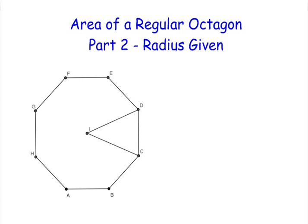To refresh, the radius of a regular polygon goes from the center to one of the vertices, or another way to think about it, it's the radius of the circumscribed circle.